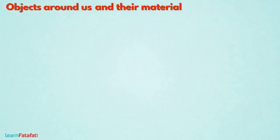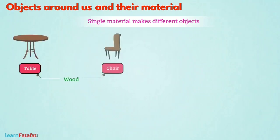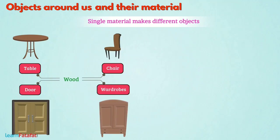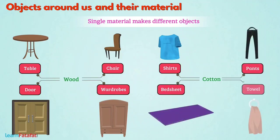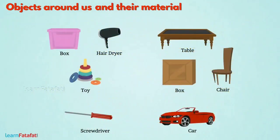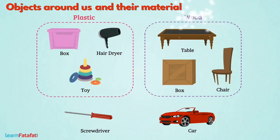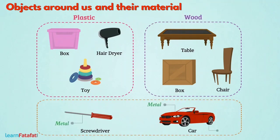It is also important to note that a single material can be used to make different objects. From wood we produce tables, chairs, doors, wardrobes, etc. From cotton we produce shirts, pants, bed sheets, towels, etc. There is a table showing some materials and the things produced from them. To classify objects, we identify the material from which they are made — things made of plastic, things made of wood, and things made from a combination of more than one material.